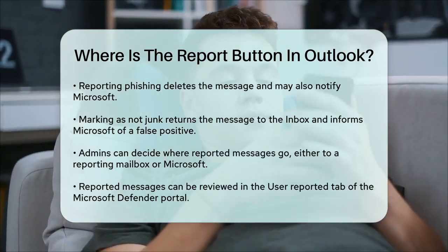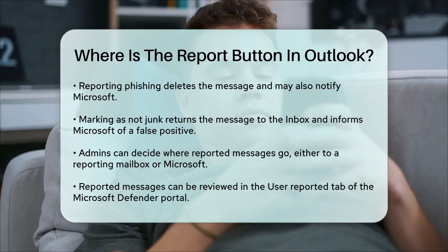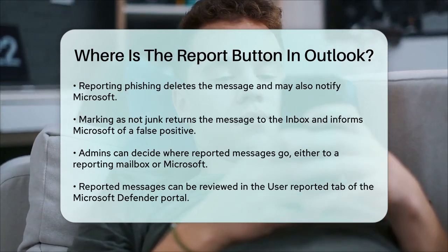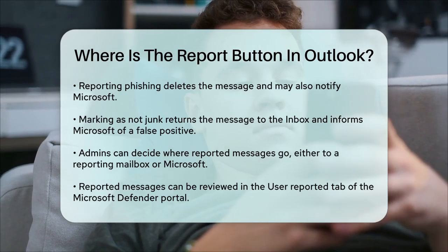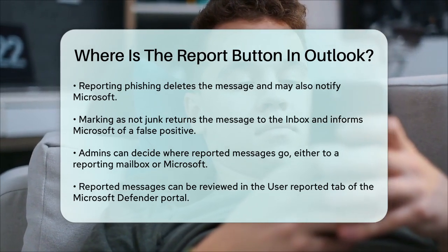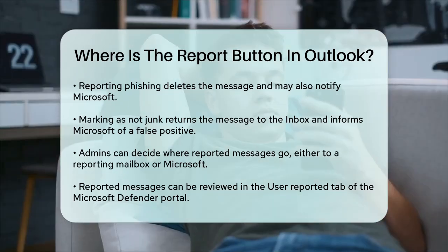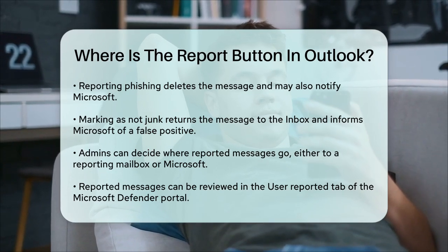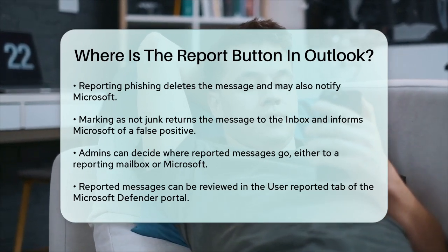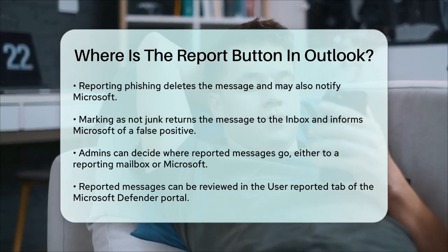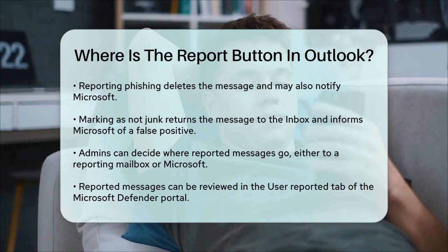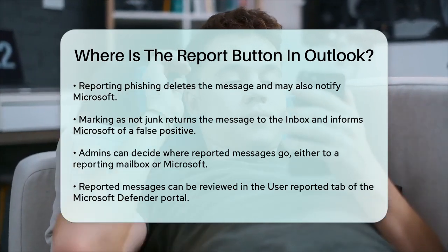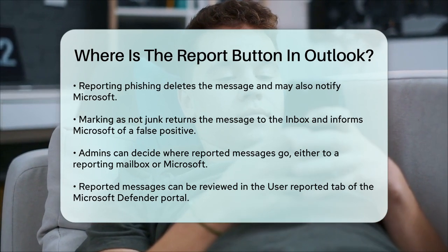Admins can configure where these reported messages go — either to a specified reporting mailbox, to Microsoft, or both. These messages can be reviewed on the user-reported tab in the Microsoft Defender portal. To summarize, the Report button in Outlook is a powerful tool for managing spam and phishing emails, and it's easily accessible once you know where to look and how to configure it.